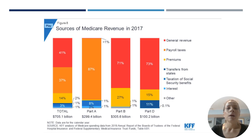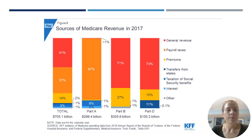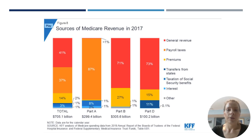When Medicare was first established, there was a trust fund, but currently we're spending more money than is going into that trust fund. So what has to happen is that the federal government, through general appropriations, has to fund Medicare.